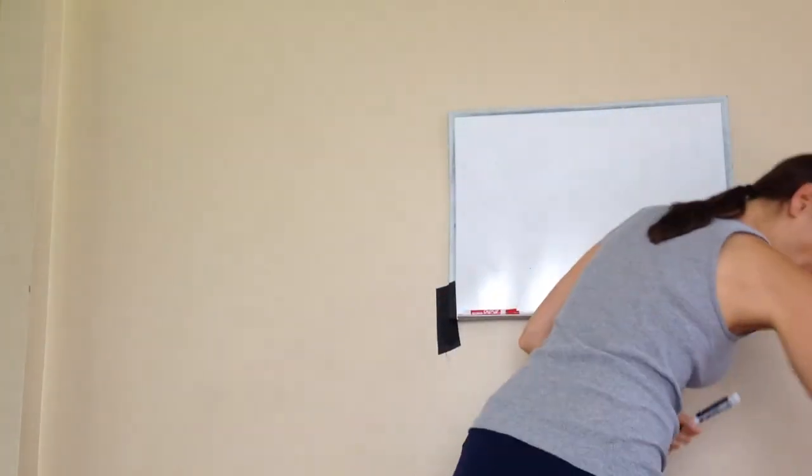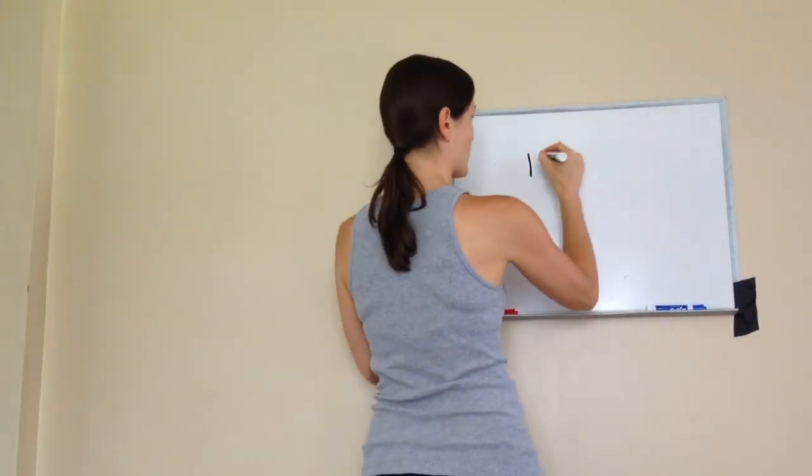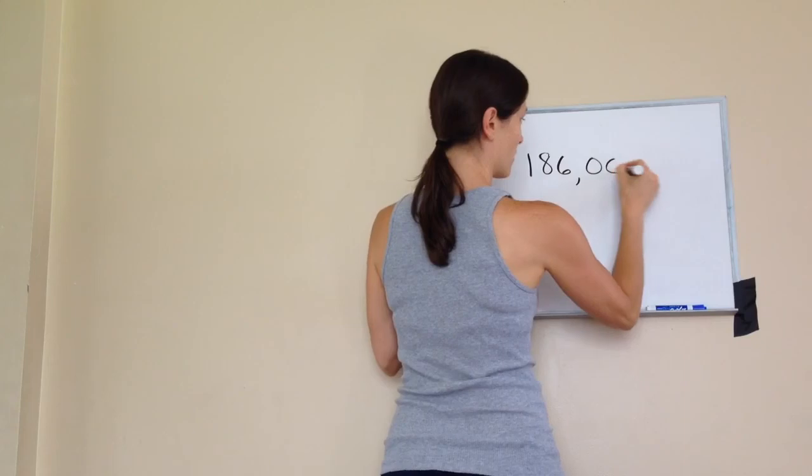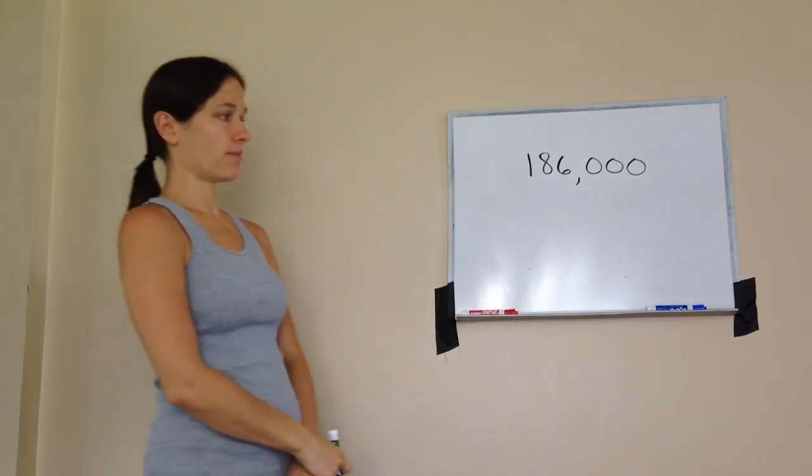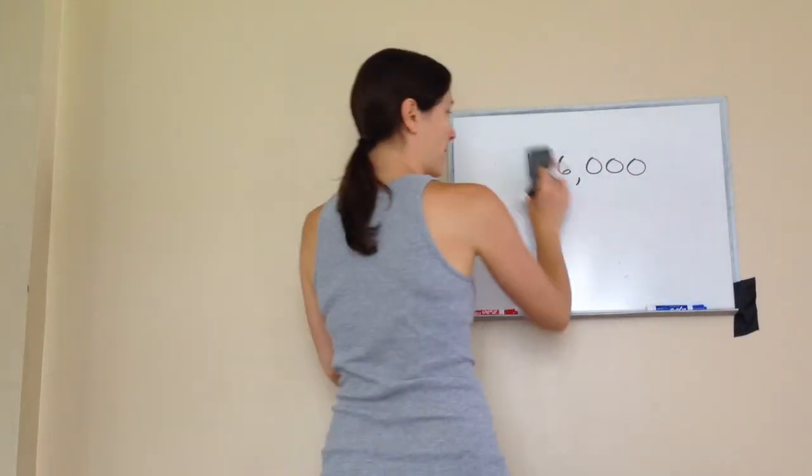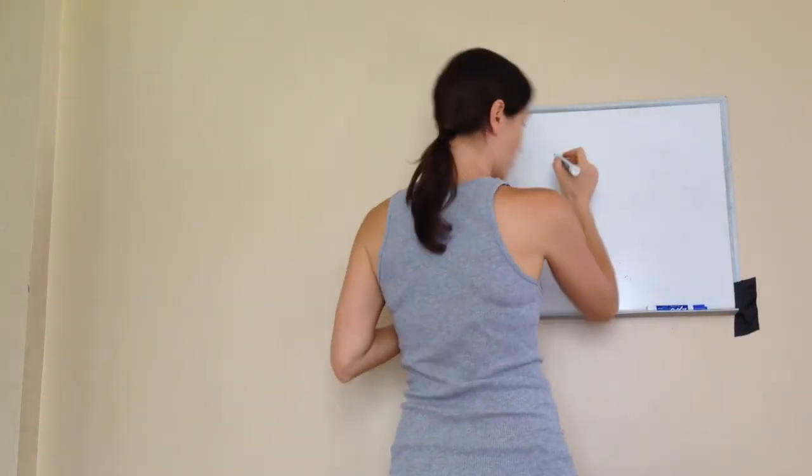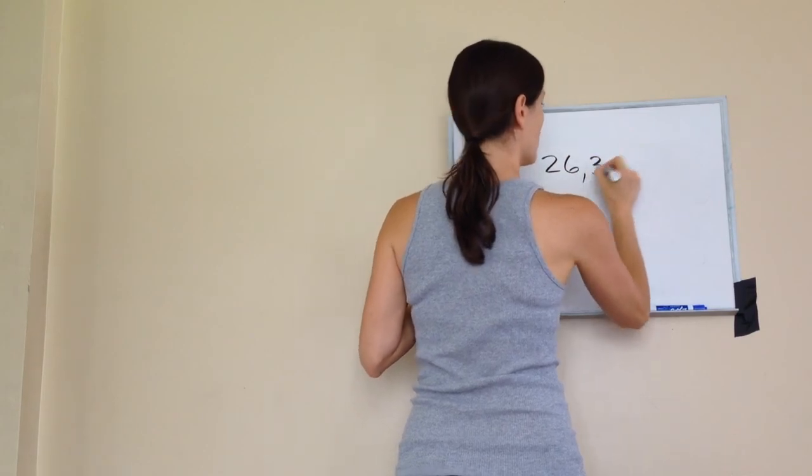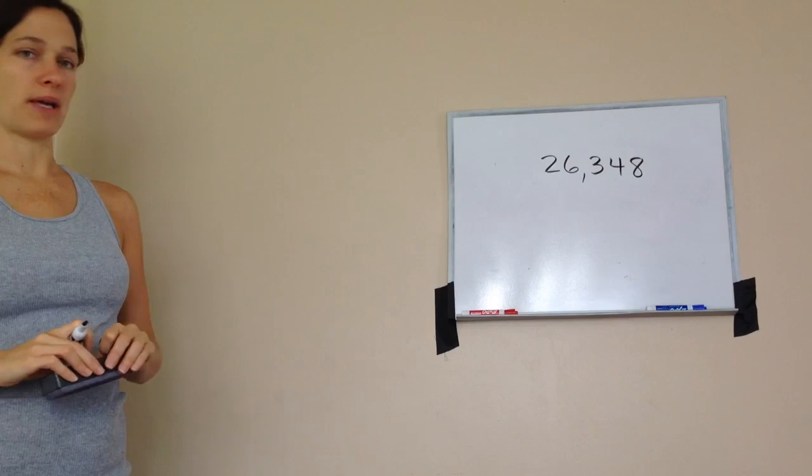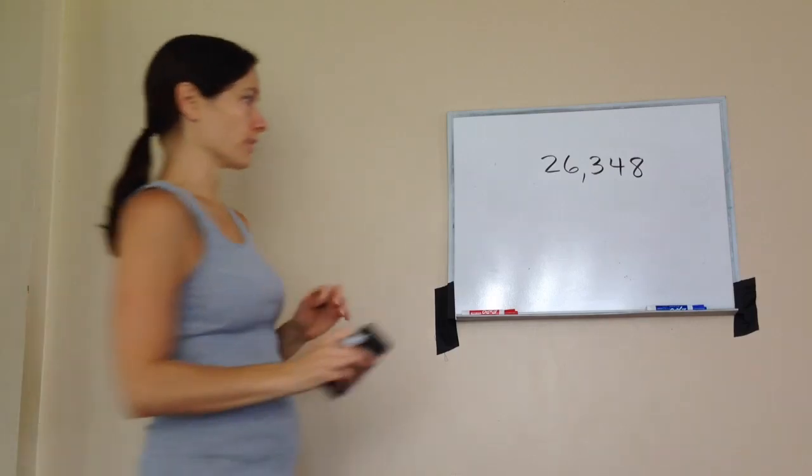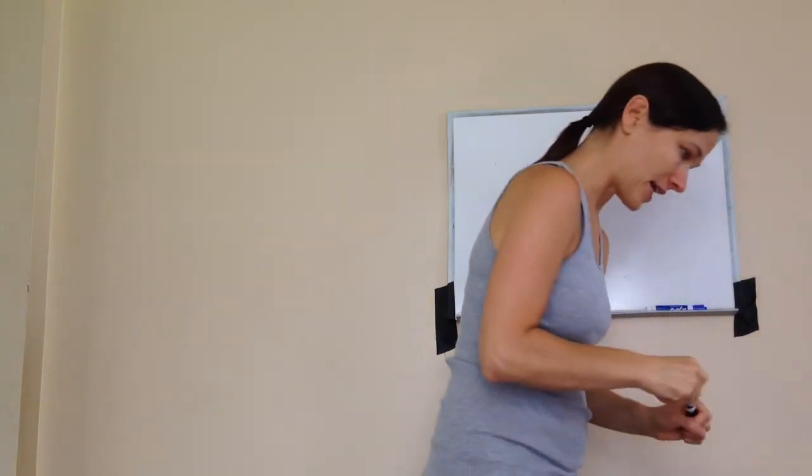All right, let me write down a number and I want you to tell me how many digits it has in it. How many digits does that number have? Six, very good, excellent. It has six digits. Now if I asked you what is the last digit in this number, what would you tell me? Eight, very good, you're exactly right. Good job, all right, that is lesson one.